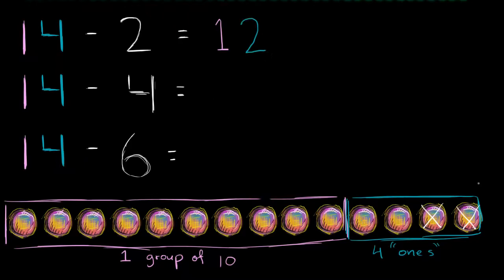Now what about 14 minus 4? So let me clear this out. So what is 14 minus 4 going to be? So now I'm going to take away 1, 2, 3, and 4. I've essentially taken away all 4 1's. So what am I left with? Well, I still have my 1 group of 10. I still have my 1 group of 10. And I have 0 1's left over. I have no 1's anymore. So now I have 0 1's. And so 14 minus 4 is 10. And that makes sense. 14 is 10 plus 4. And now we're subtracting 4 to get 10.